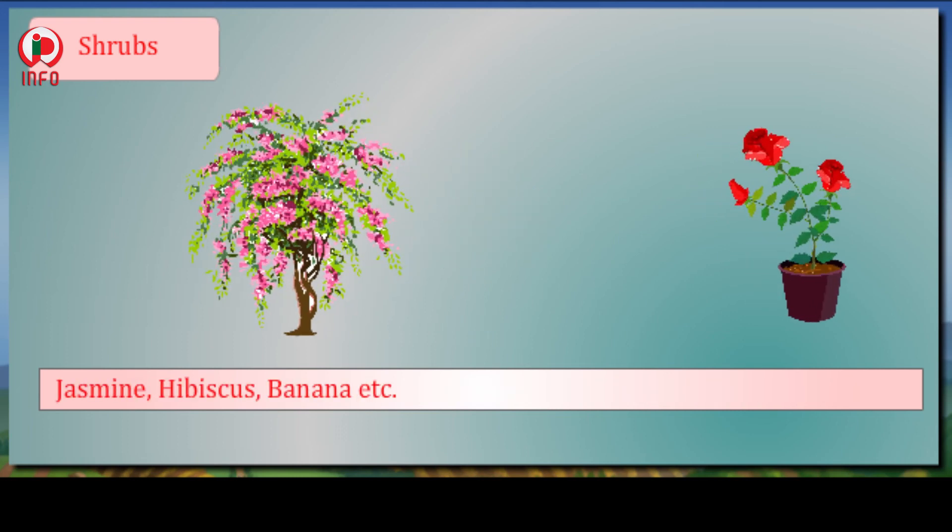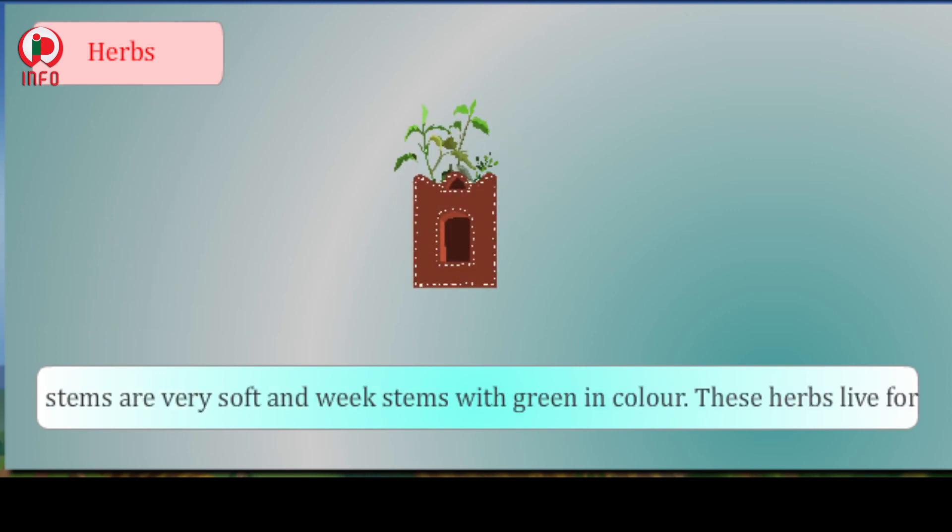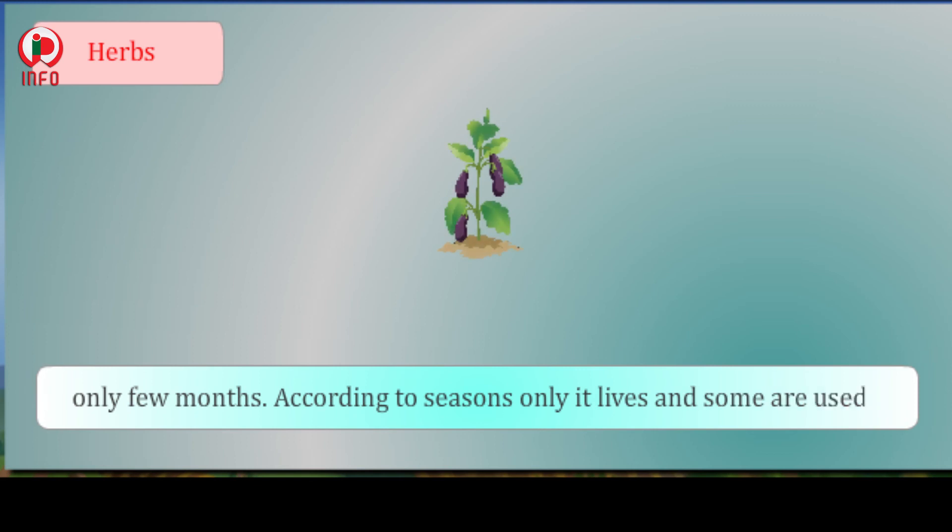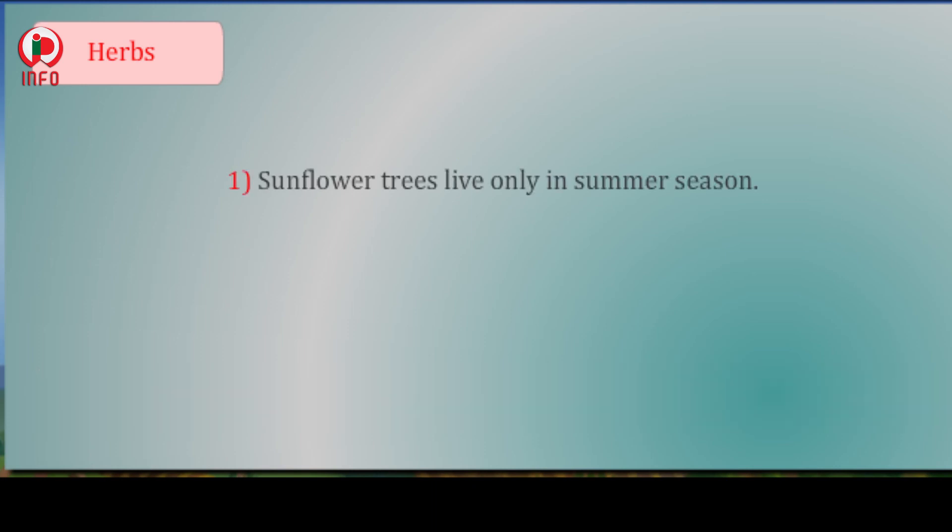Herbs: It consists of very small plants. An herb is smaller than a shrub and their stems are very soft and weak, with stems green in color. These herbs live for only a few months according to seasons. Some are used for medicines. For example, sunflower trees live only in summer season. Hellebore trees live only in winter season. Examples: mint, spinach, tulsi, brinjal.